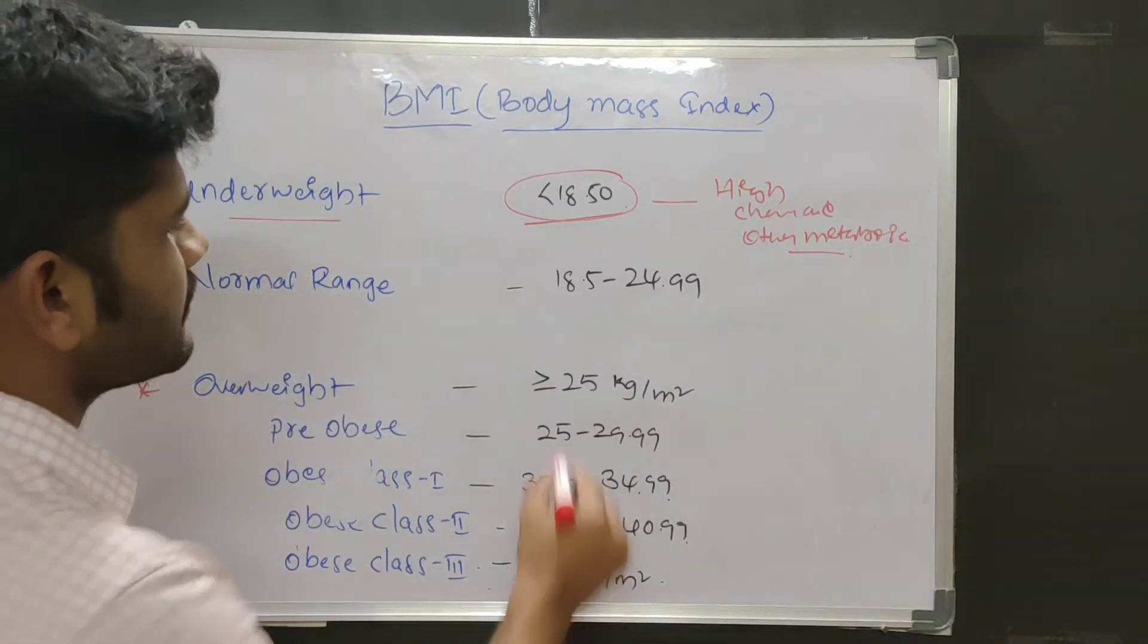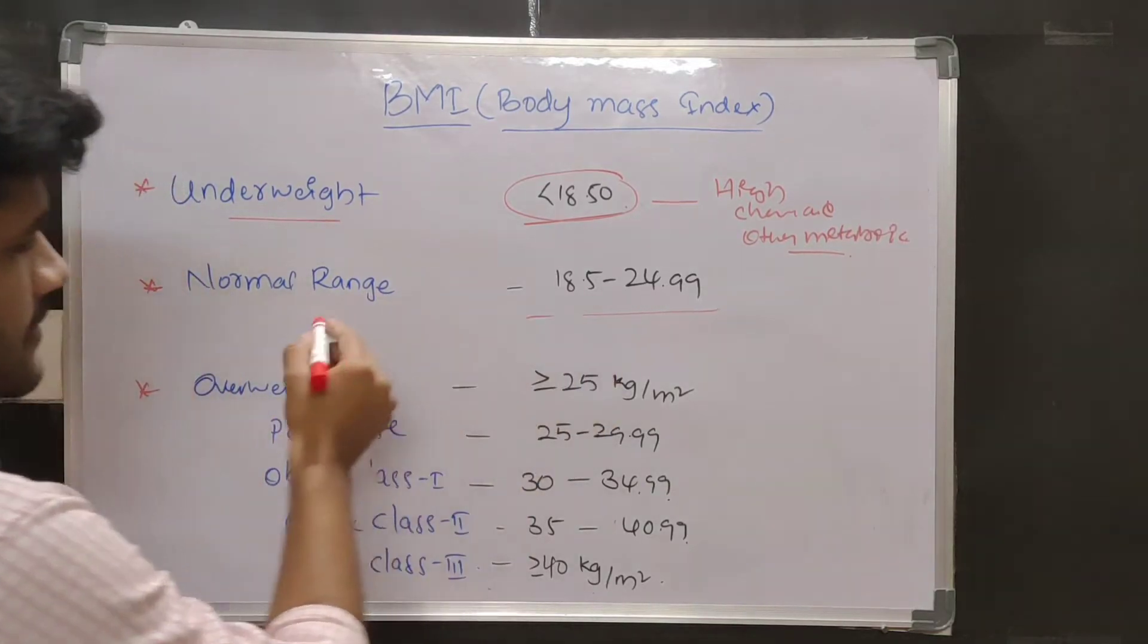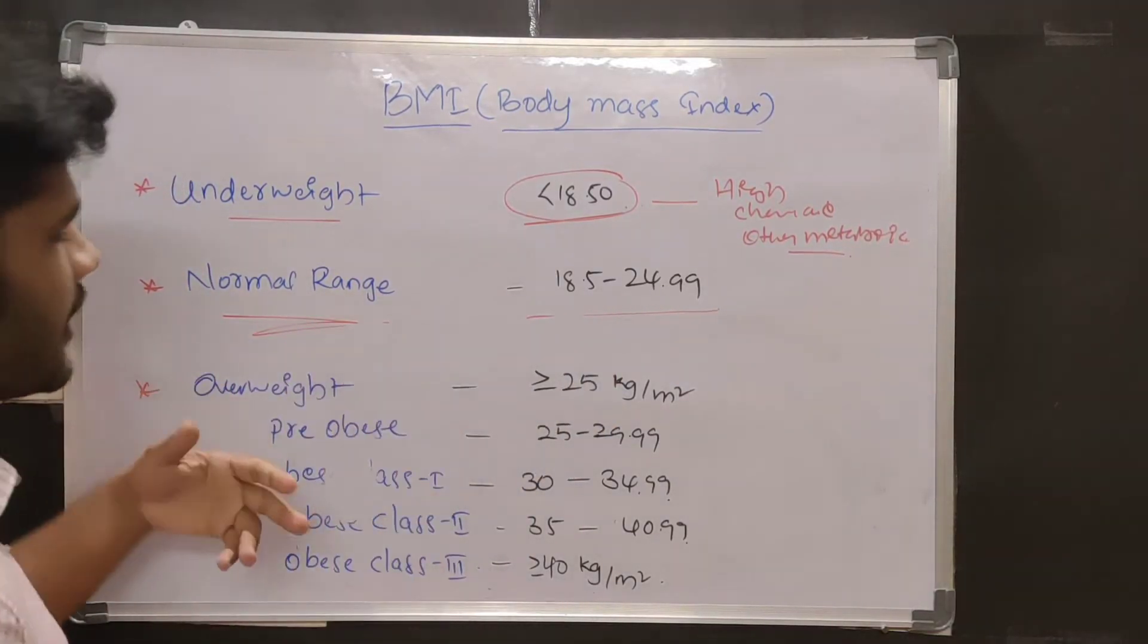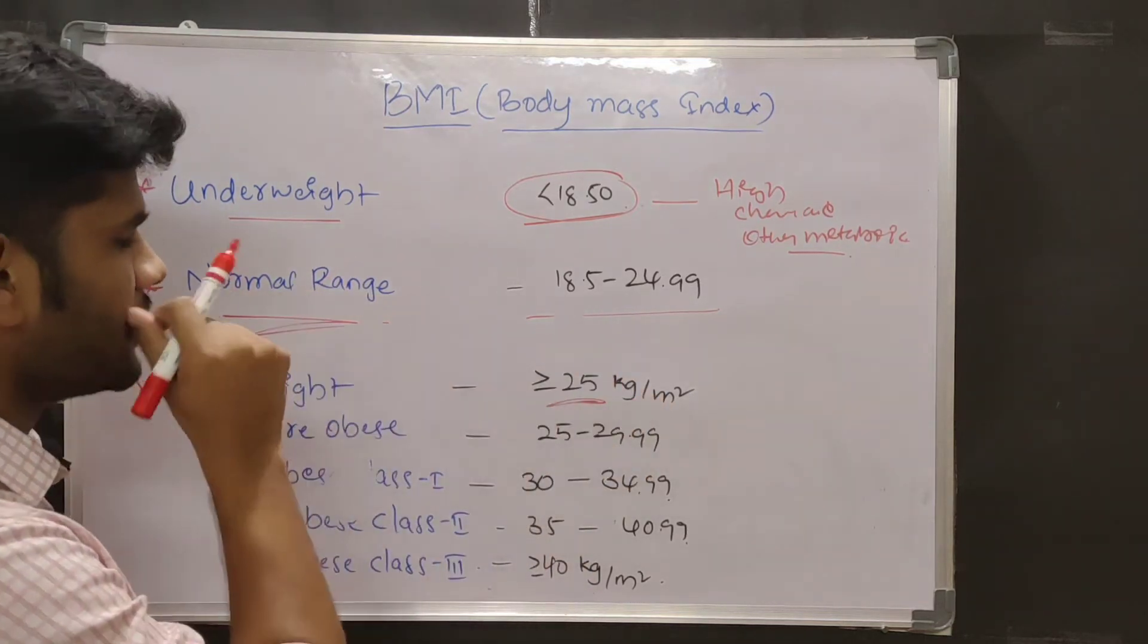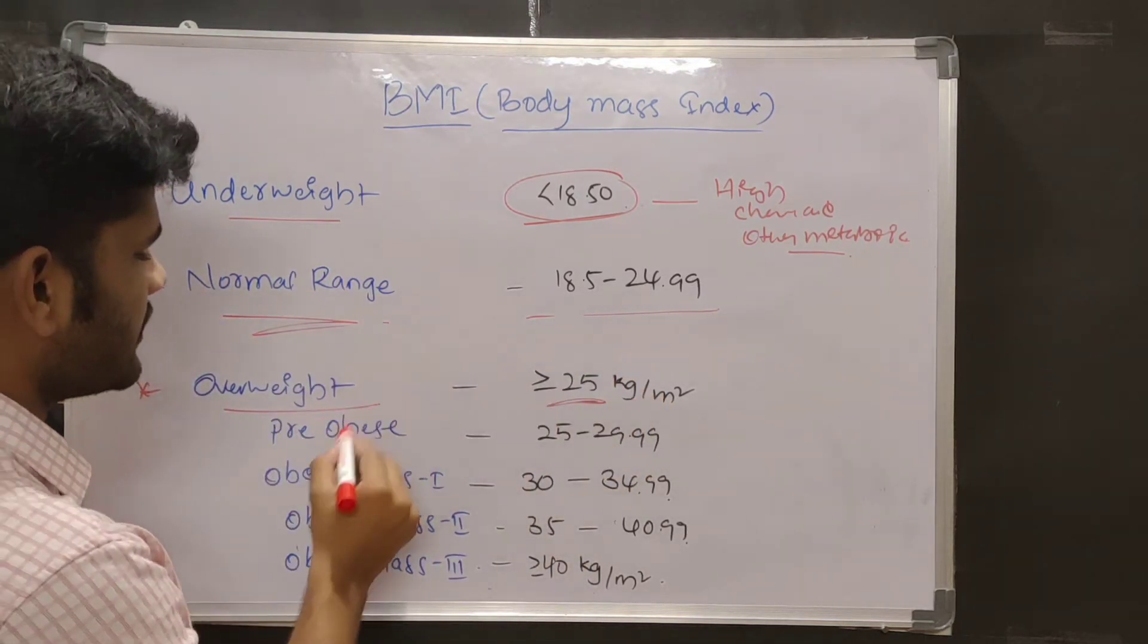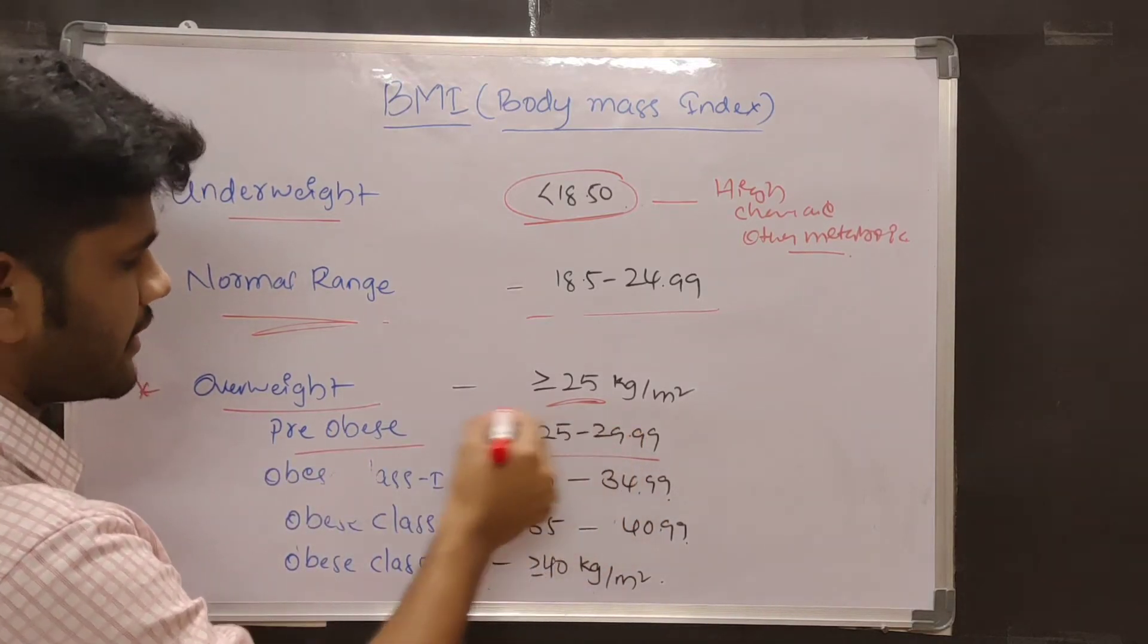BMI ranging from 18.5 to 24.99 is considered as normal range. And overweight: BMI greater than or equals to 25 kg per meter square is considered as overweight. And BMI ranging from 25 to 29.99 is considered as pre-obese.